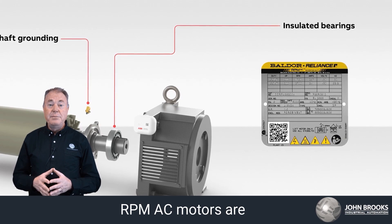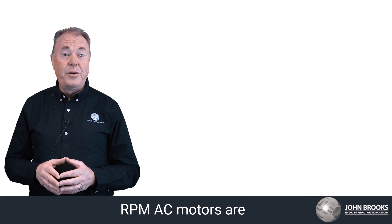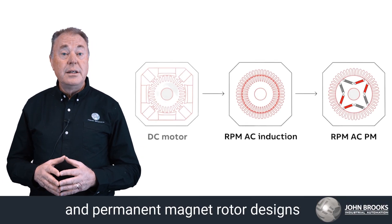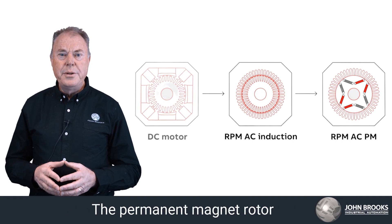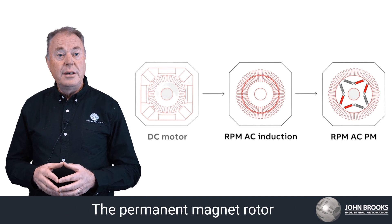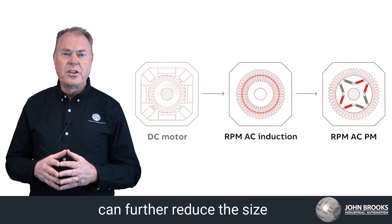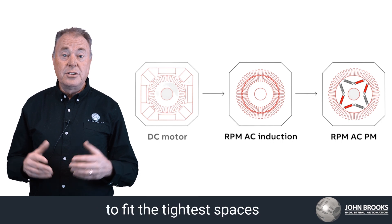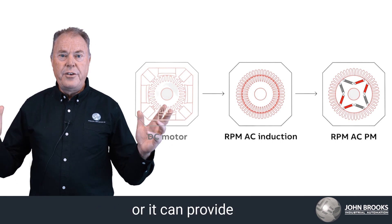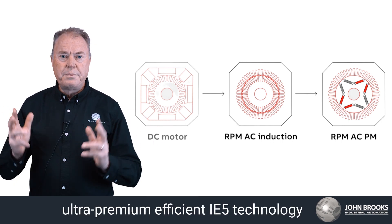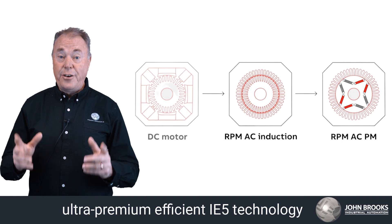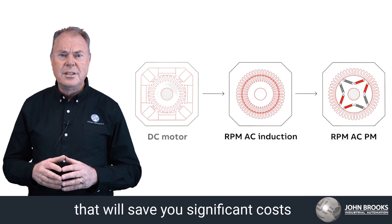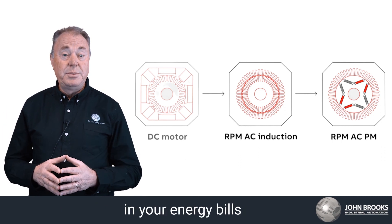RPM AC motors are offered in both induction and permanent magnet rotor designs. The permanent magnet rotor can further reduce the size of your machine to fit tighter spaces, or it can provide ultra premium efficient IE5 technology that will save you significant costs on your energy bills.